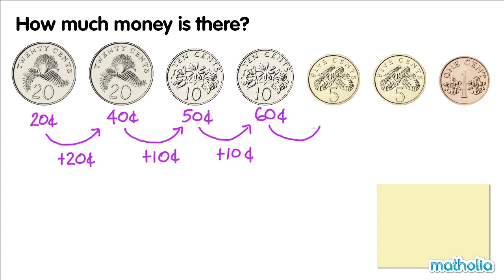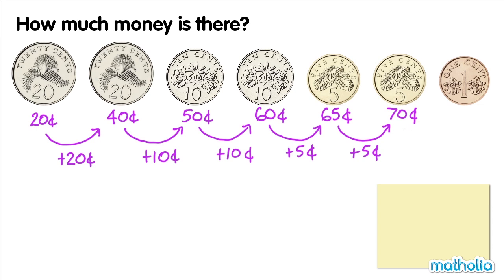60 cents plus 5 cents is 65 cents. $0.65 plus $0.05 is $0.70. $0.70 plus $0.01 is $0.71. There is $0.71.